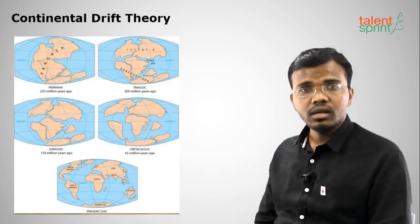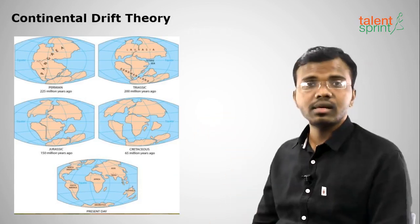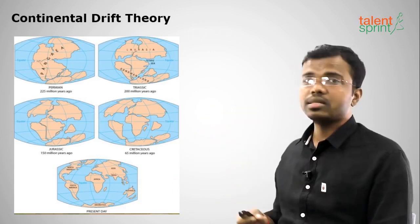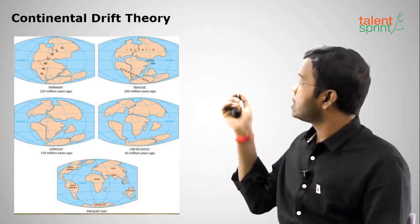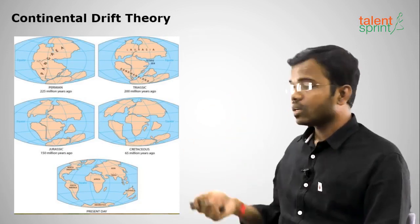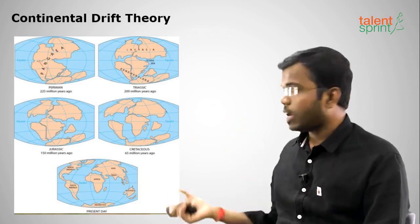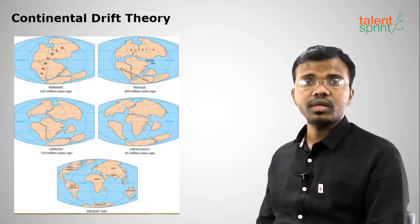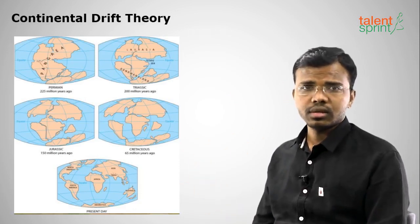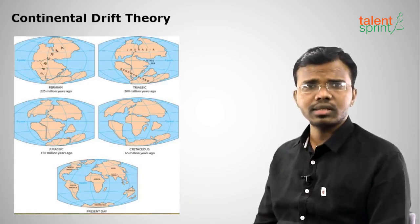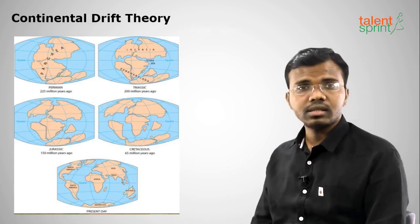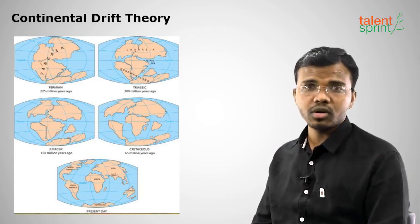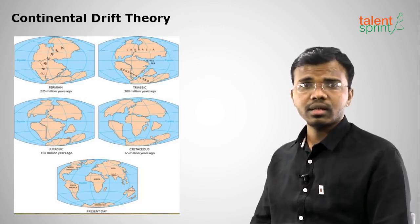In the figure, you can see Pangea as a single landmass covered by Panthalassa, which later disintegrated into Laurasia and Gondwana Land. Through further disintegration over geological eras, we now have seven continents. This is the Continental Drift Theory proposed by Alfred Wegener in 'The Origin of Continents and Oceans.'